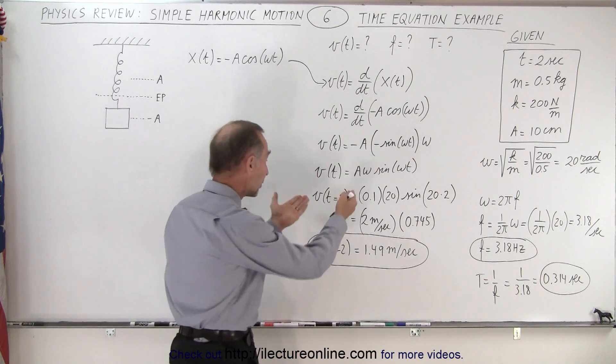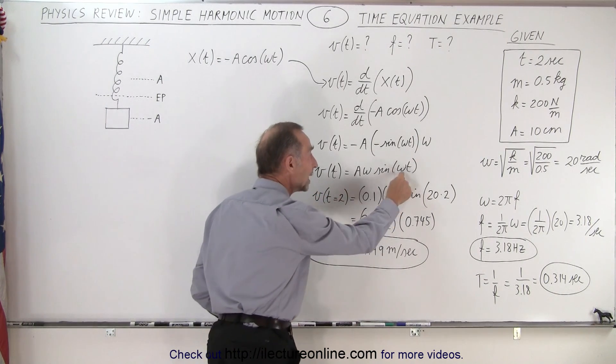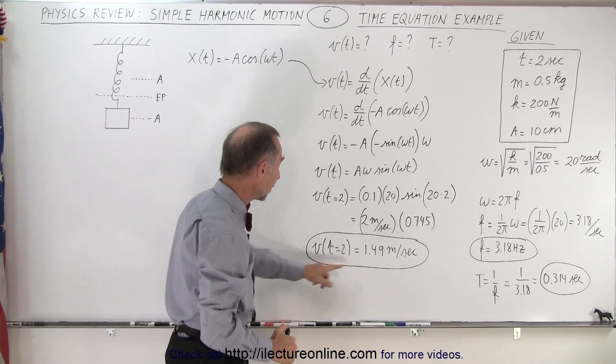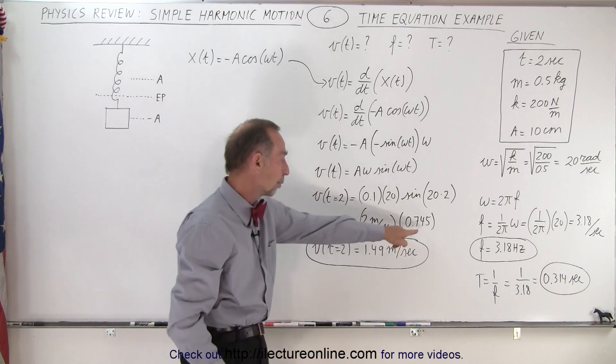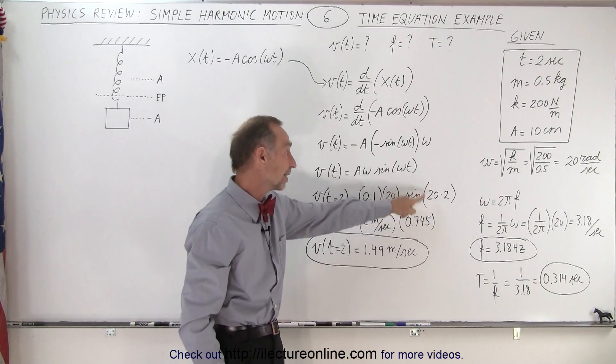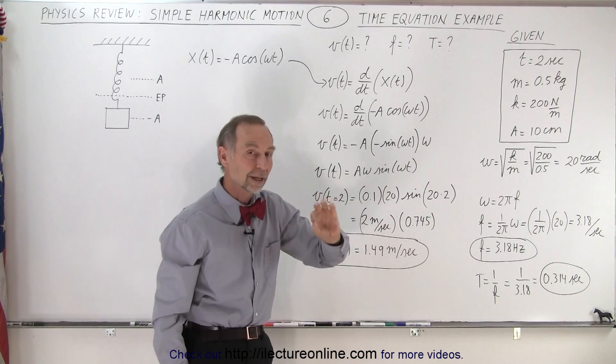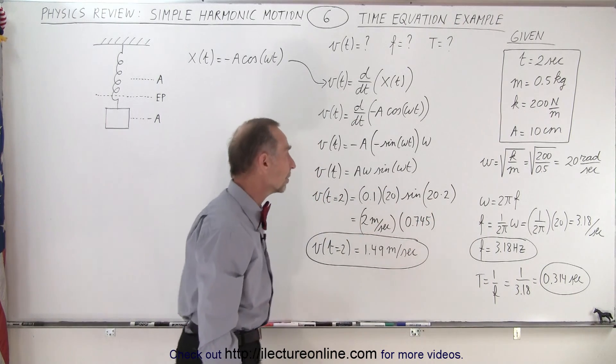Then we plug in the parameters, and notice you have to have your calculator in radian mode because this will be in radians, not in degrees. And so you end up with this value right here. Always check to make sure you get the right value here when you plug this angle into the sine function, realizing that these are radians, not degrees.